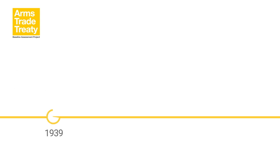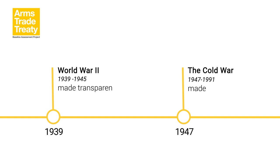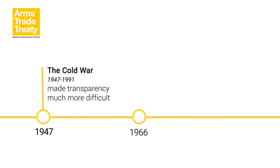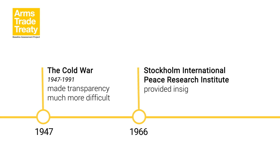World War II and the Cold War, however, made transparency much more difficult. The international political environment was plagued by a lack of trust and an unwillingness to share information. As a result, non-governmental organizations, such as the Stockholm International Peace Research Institute, known as SIPRI, stepped in to try to fill the information gaps. In many cases, non-governmental sources of information on arms transfers were often the only sources for insight on international arms transfers available during this period. Yet governments did try to promote transparency within the UN framework during this period, with very little success, as Cold War politics played out on the UN stage through a variety of resolutions.